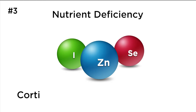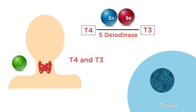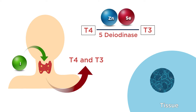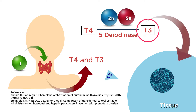Number three: nutrient deficiencies are caused by cortisol and stress. Cortisol will block the mineral absorption of iodine, zinc, and selenium. The thyroid needs iodine in order to create T4 and T3. T4 is converted into T3 through specific enzymes that are zinc and selenium dependent. Once T3 is converted from T4, it acts upon cells and tissues to increase cell function and metabolism.